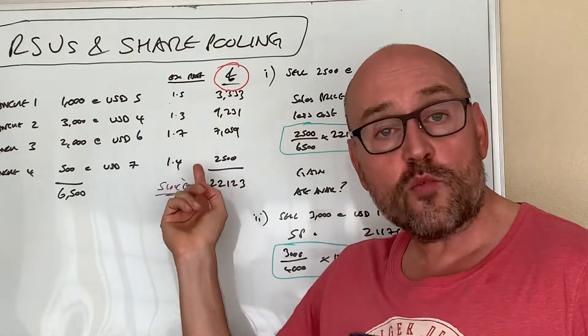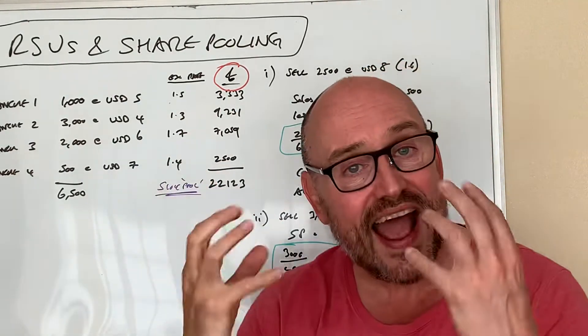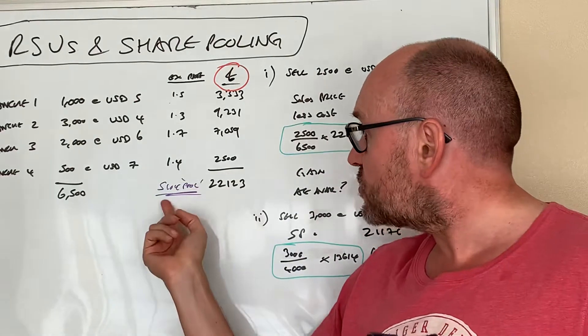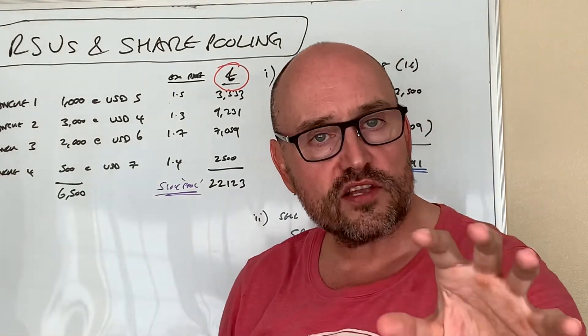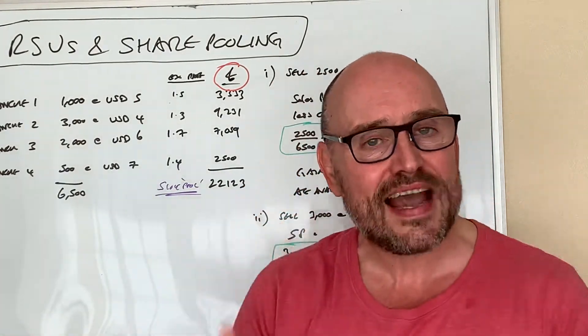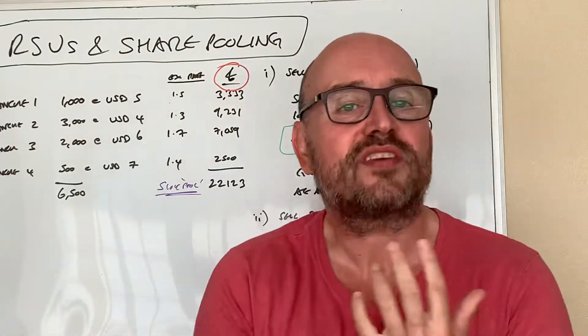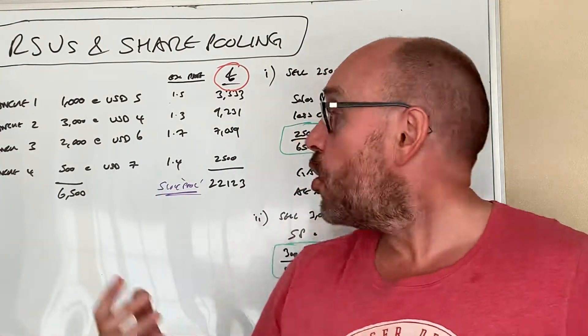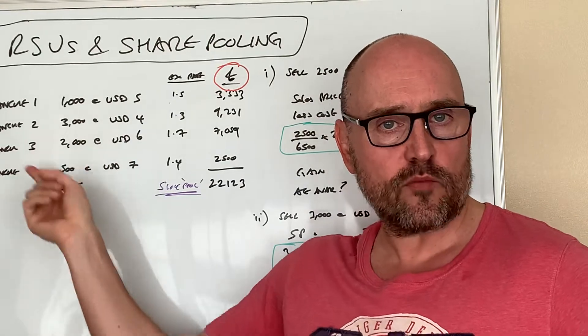We just do the conversion and then we add these up. This is what we call the share pool for capital gains tax. The tax man basically says when you sell some of these from this pool, rather than try and say we'll do it on a first in first out basis or a last in first out basis.